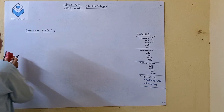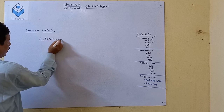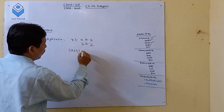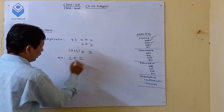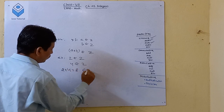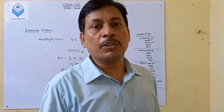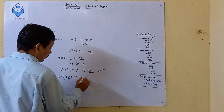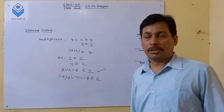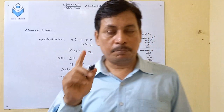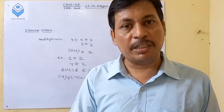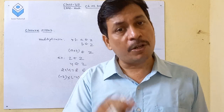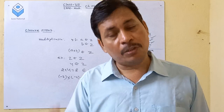For multiplication: if A belongs to Z and B belongs to Z, then A into B also belongs to Z. For example, 2 belongs to Z and 4 belongs to Z, so 2 into 4 equals 8, which belongs to Z. Also, minus 2 into minus 4 equals minus 8, which belongs to Z. So the closure property of integers for multiplication is also satisfied. Closure property of integers for addition, subtraction, and multiplication are all satisfied.